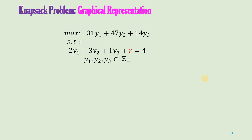Let us try to graphically represent the given information. We are trying to maximize 31·y1 + 47·y2 + 14·y3, where y1, y2, y3 represent the number of units of item 1, item 2, and item 3 respectively. Then you have the constraint on weight: the total weight should be less than or equal to 4 tons. One unit of item 1 consumes 2 tons, one unit of item 2 consumes 3 tons, and one unit of item 3 consumes 1 ton. R represents the remaining available tons in the vessel. And since fractional units are not allowed, y1, y2, y3 all come from integers.